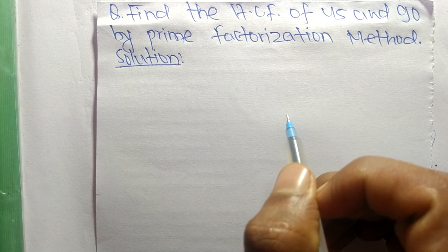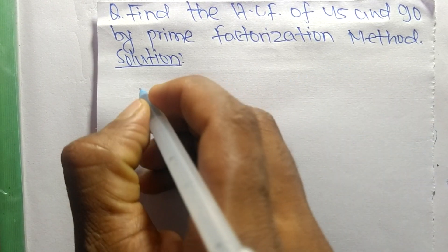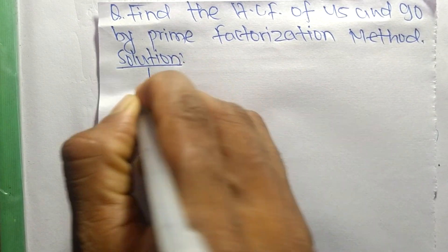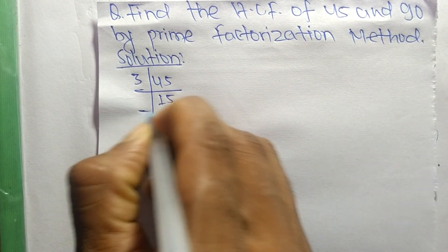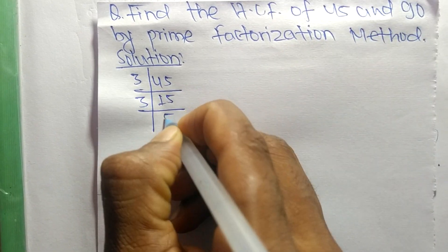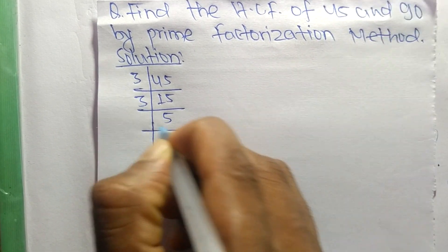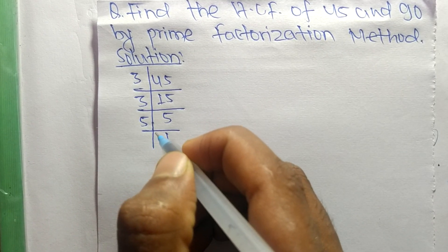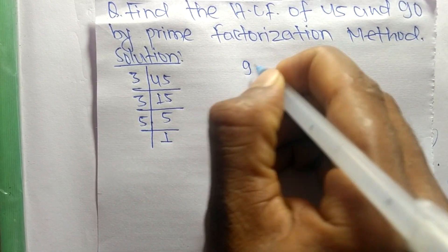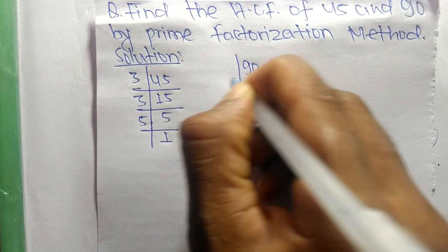So first we find out the prime factors of 45. It is 3 times 15 equals 45, 3 times 5 equals 15, and 5 times 1 equals 5. Like this, the prime factors of 90 are: